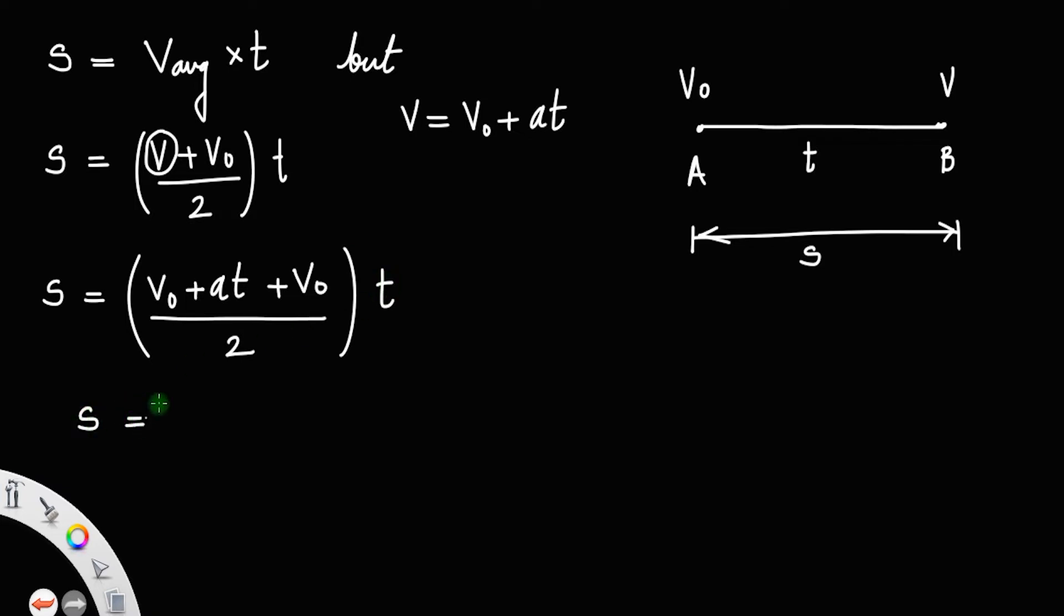This will be s equal to v0 plus v0, which is 2v0, plus at, whole divided by 2, into t. That is s equal to 2v0t plus at into t, which is at square, whole divided by 2.